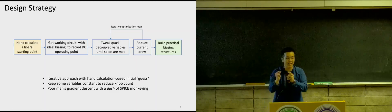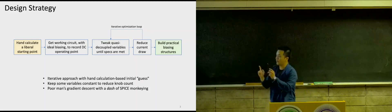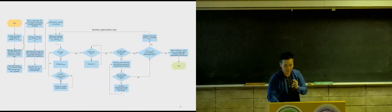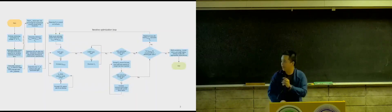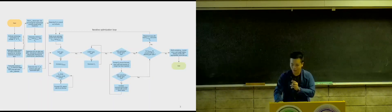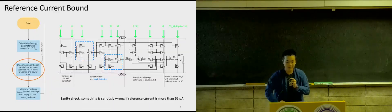This is sort of a poor man's gradient descent with just a hint of SPICE monkeying, and you will see that I do indeed sweep one variable, which is fine. This is a very comprehensive flowchart — I will break it down into very digestible chunks.